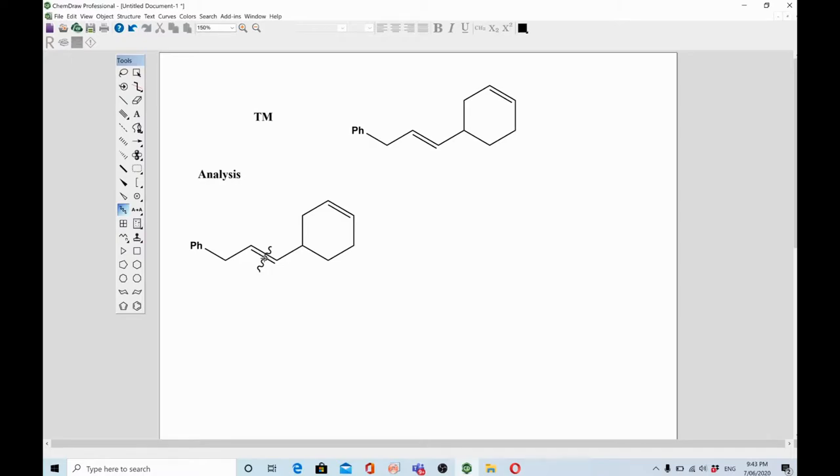We use a Wittig reaction approach because, if you remember, we can prepare alkenes from Wittig reactions. Wittig reaction is a reaction where we use triphenylphosphine as a Wittig reagent with a carbonyl compound.